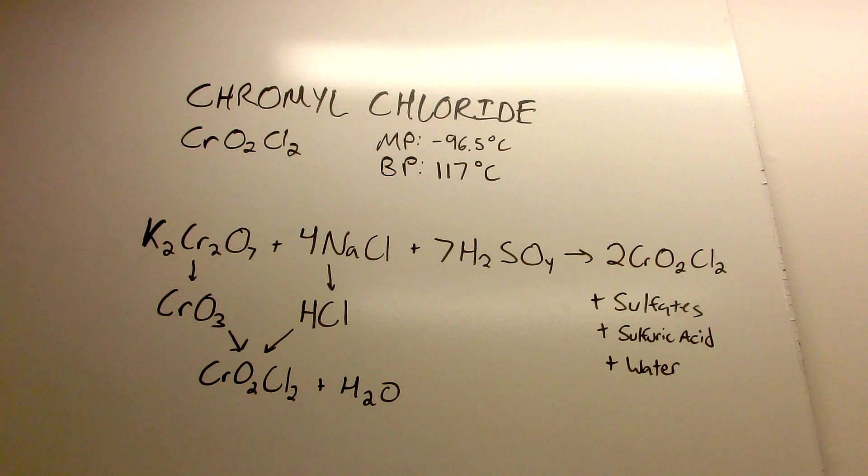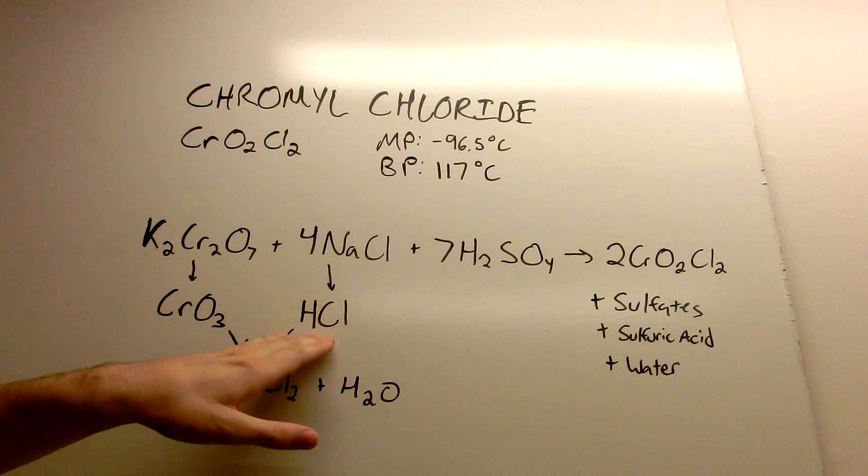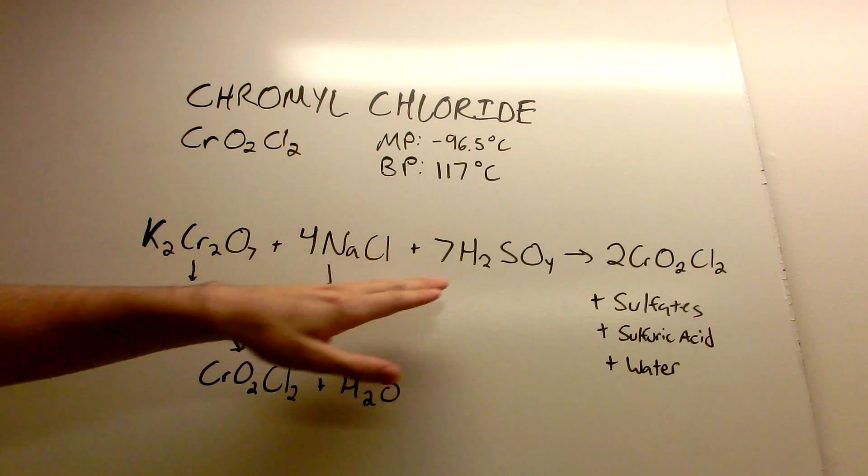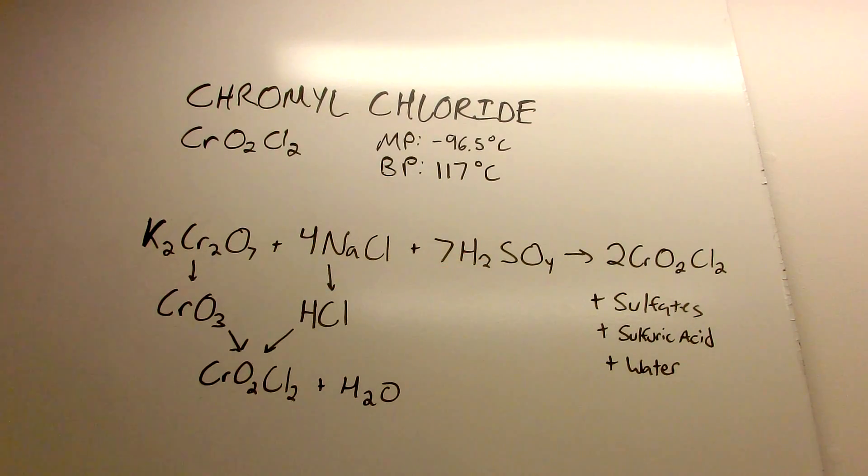Now this whole reaction is a giant equilibrium because chromal chloride will react with water to form chromic anhydride and chromic acid as well as hydrogen chloride. To drive this reaction toward the products we need something to sequester this water. That's why so much sulfuric acid is used in this reaction - it has a high affinity for water and will bind up this water and drive the reaction toward these products. Then we simply heat up to about 117 Celsius to distill off the chromal chloride. So let's get to it.